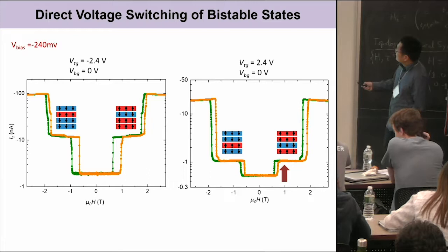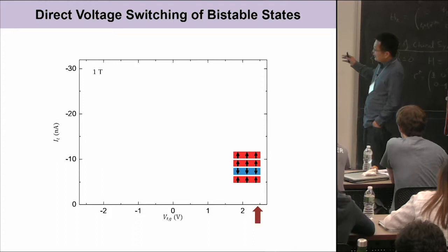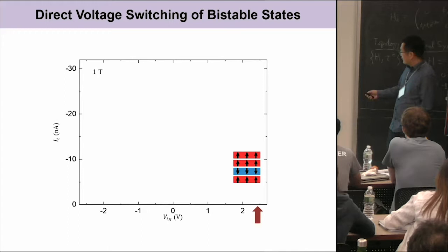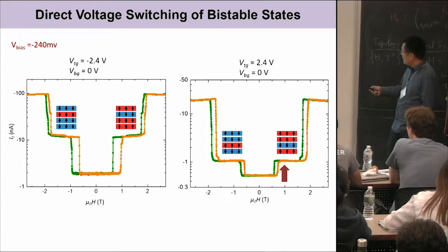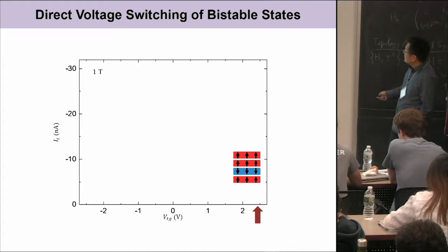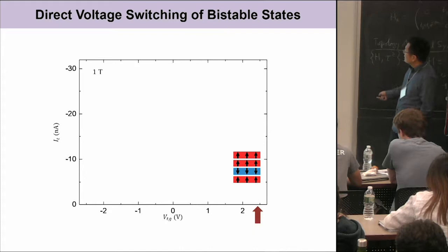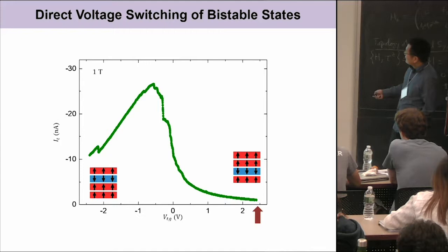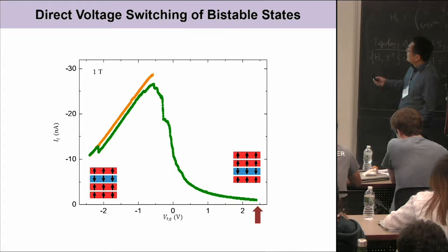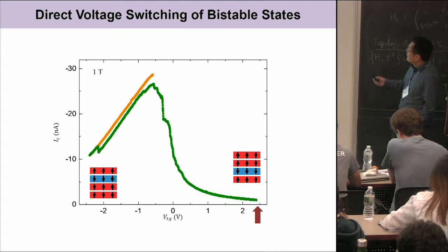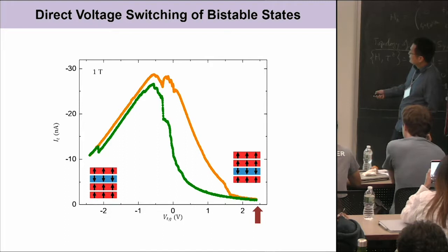We can fix the magnetic field and continuously sweep the gate voltage. Starting with a particular state and sweeping the gate voltage, the current increases then decreases, corresponding to switching from one state to the other state. Sweeping the gate voltage back corresponds to switching back. This hysteresis curve corresponds to the magneto-electric coupling effect.